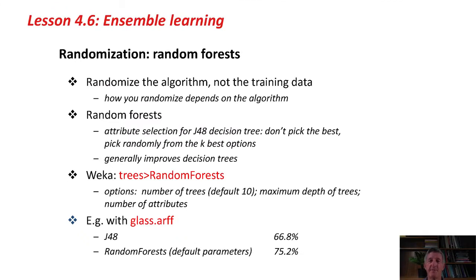The next method is random forests. Here, instead of randomizing the training data, we randomize the algorithm. Random forests are used with decision tree algorithms. Remember that J48 selects the best attribute for splitting each time. You can randomize this by not necessarily selecting the very best, but choosing a few of the best options and randomly picking among them — giving you different trees every time. Generally, if you randomize decision trees and bag the result, you get better performance.